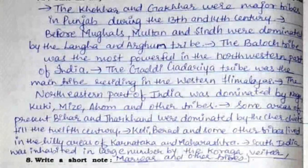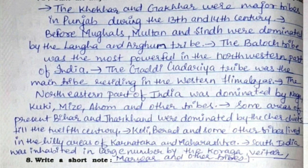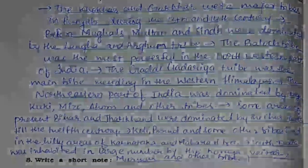Second: State the major tribes of India and their regions. The Koker and Gakkar were major tribes of Punjab during the 13th and 14th centuries. Before the Mughals, Multan and Sindh were dominated by the Langha and Arghun tribe. The Baloch tribe was the most powerful in the northwestern part of India. The Gaddi Gadaria tribe was the main tribe in the western Himalayas. The northeastern part of India was dominated by Naga, Kuki, Mezo, Ahom, and other tribes. Some areas of present Bihar and Jharkhand were dominated by the Chair chiefs till the 12th century. Koli, Berad, and other tribes lived in the hilly areas of Karnataka and Maharashtra. South India was inhabited by the Kuraga, Waitar, Marwad, and other tribes.